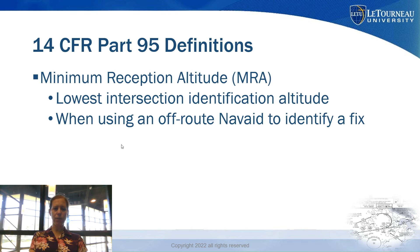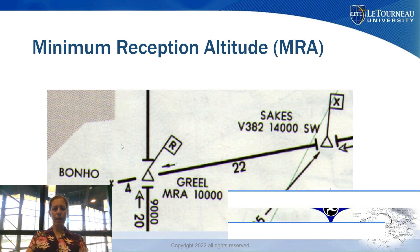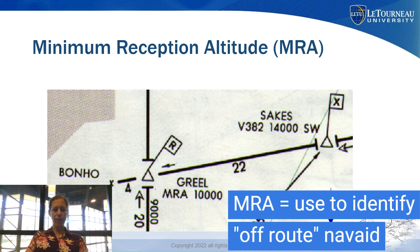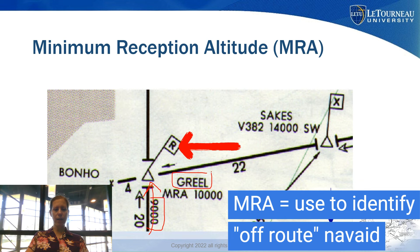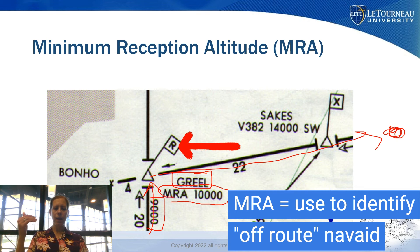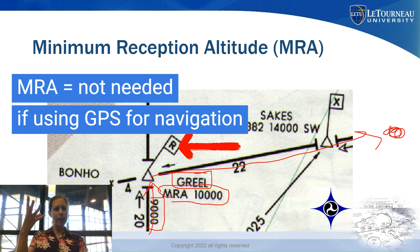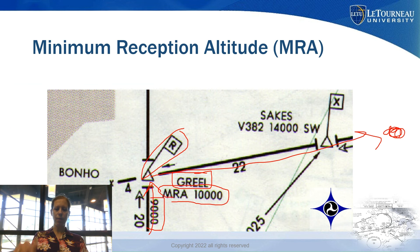The Minimum Reception Altitude, or MRA, applies when using an off-route nav aid to identify a fix. For instance, if navigating along a Victor airway at 9,000 feet and you need a ground-based nav aid to identify an intersection like Grill Intersection, you would have to be at 10,000 feet. If using GPS for navigation and you already know where the fix is, the MRA is less relevant. The MRA is designated by an R flag coming out of the fix.